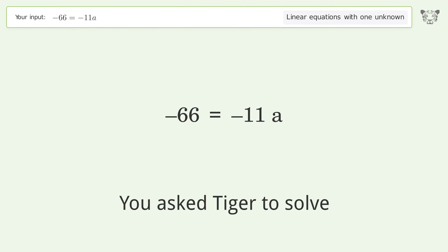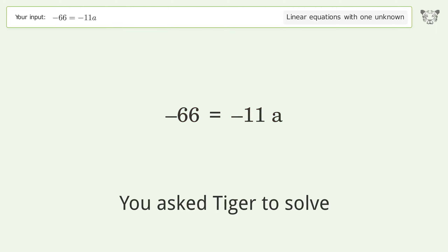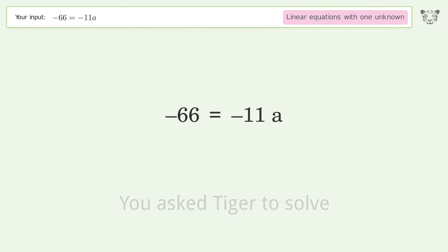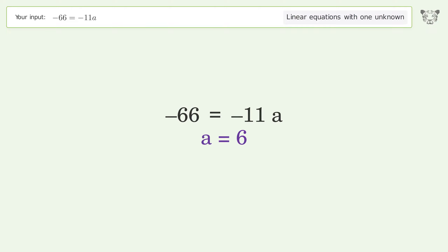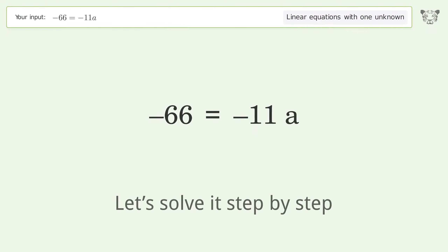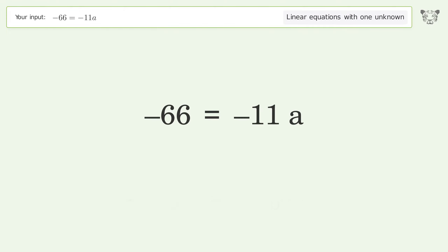You asked Tiger to solve this — it deals with linear equations with one unknown. The final result is a equals 6. Let's solve it step by step. Swap sides.